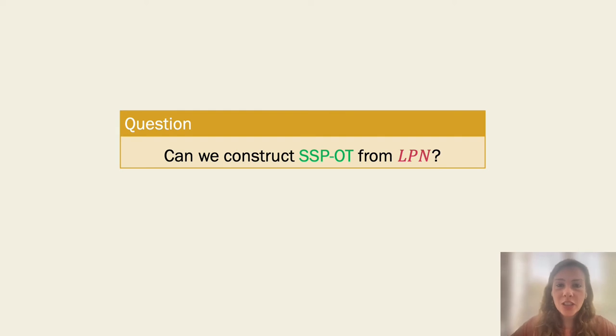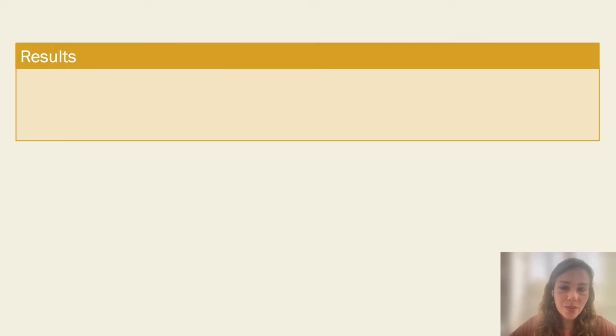So, the question that arises here, and that we try to answer in the paper, is: can we construct Statistically Sender-Private Oblivious Transfer from the Learning Parity with Noise assumption? And it turns out that generally the answer to this question is yes, we can,